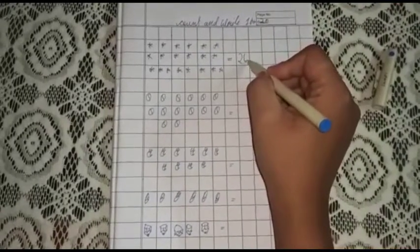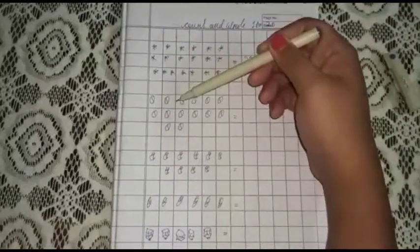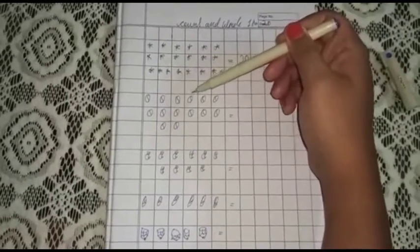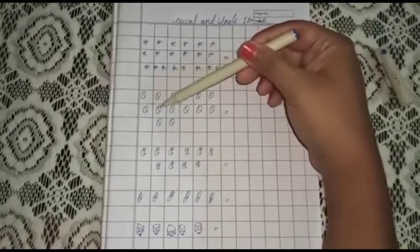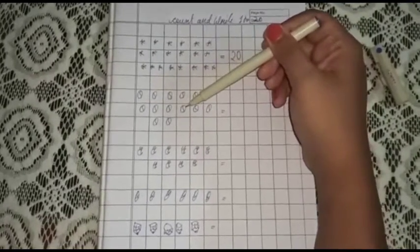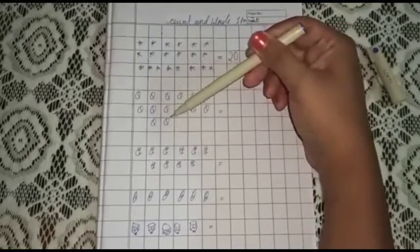There are 20 stars. Now 1, 2, 3, 4, 5, 6, 7, 8, 9, 10, 11, 12, 13, 14.